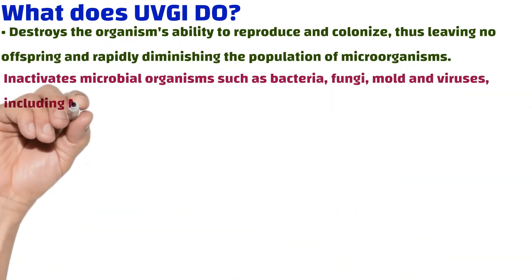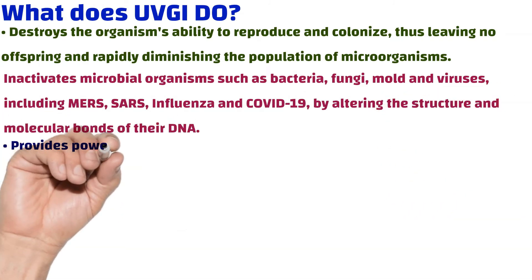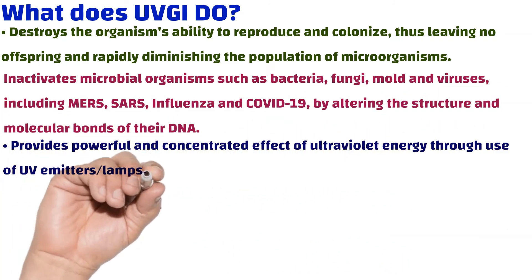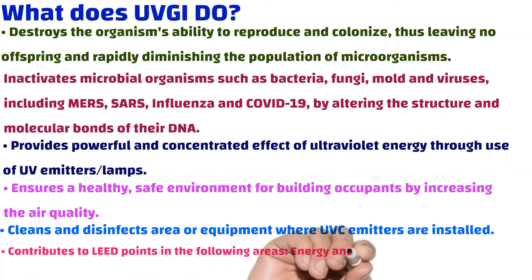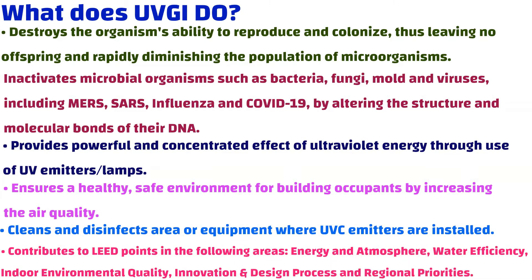What does UVGI do? It destroys the organism's ability to reproduce and colonize, leaving no offspring and rapidly diminishing the population of microorganisms. It inactivates microbial organisms such as bacteria, fungi, mold, and viruses — including MERS, SARS, influenza, and COVID-19 — by altering the structure and molecular bonds of their DNA. It provides powerful, concentrated ultraviolet energy through UV emitters or UV lamps, ensures a healthy and safe environment for building occupants by increasing air quality, cleans and disinfects areas or equipment where UVC emitters are installed, and contributes to LEED points in energy and atmosphere, water efficiency, indoor environmental quality, innovation and design process, and regional priorities.